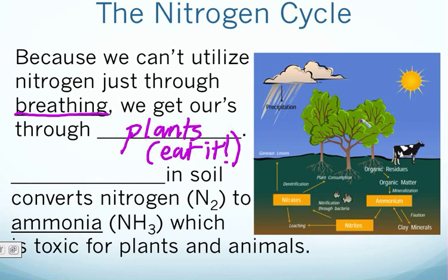We have to figure out how these plants and trees around us are getting that nitrogen in the first place, if we know that most of it is stored in the atmosphere as N2. There is one key thing that helps convert that gas nitrogen into a usable form for plants, and that one thing is bacteria.